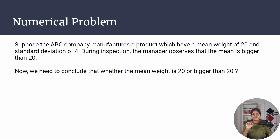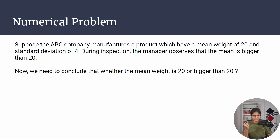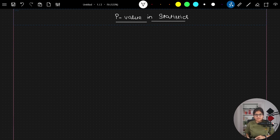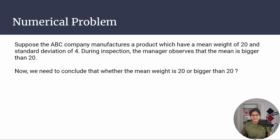Suppose the ABC company manufactures a product which has a mean weight of 20 and standard deviation of 4. So the value of μ (mu) equals 20 and the value of σ (sigma) equals 4.